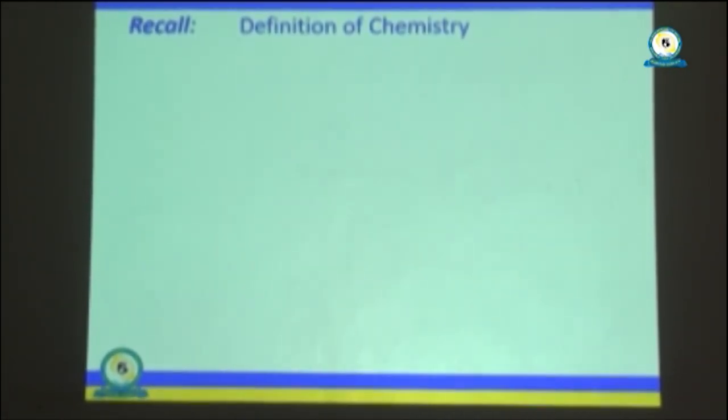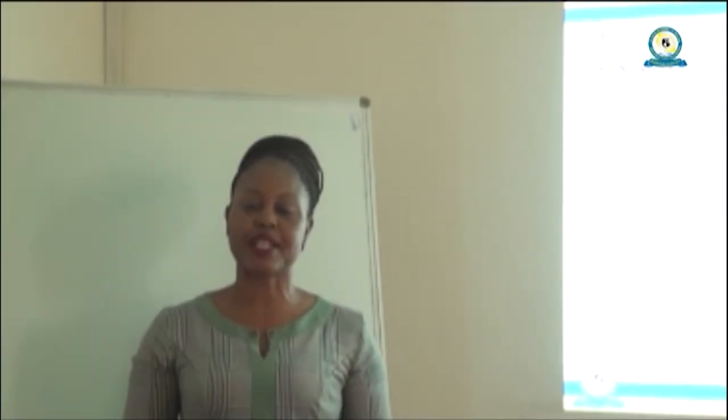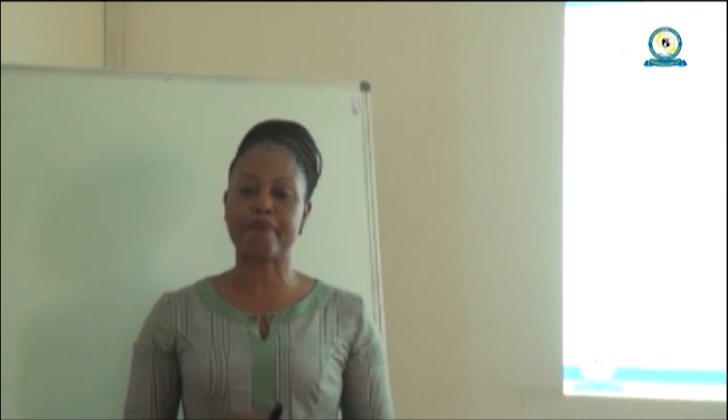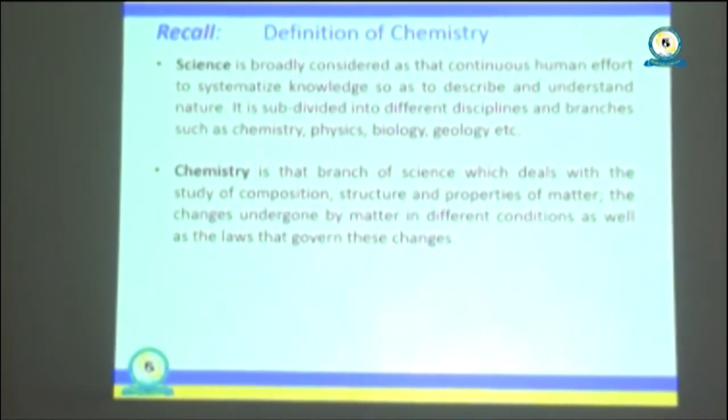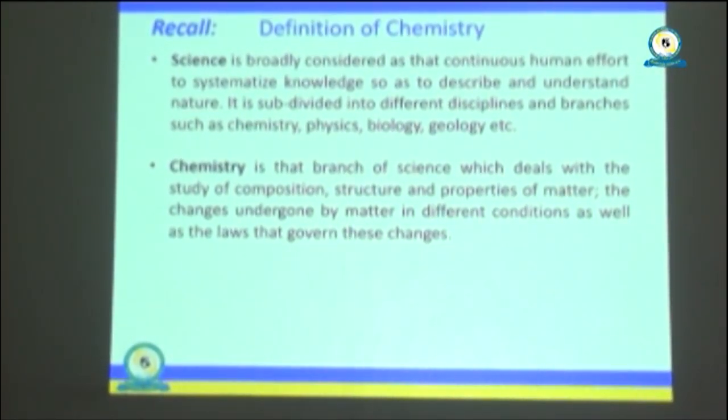Now, to start with, let us recall the definition of chemistry. You may remember that science is broadly described as that continuous effort of the human being to systematize knowledge so as to understand and describe nature. Science is subdivided into two different disciplines or branches, including chemistry, physics, biology, geology, and many others. So chemistry is that branch of science that deals with the composition, structure, properties, and changes of matter, and describes the rules that govern those changes.